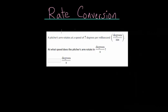For this problem, a pitcher's arm rotates at a speed of 7 degrees per millisecond. So we have 7 degrees up top and milliseconds down below. We want to know what is the speed that the pitcher's arm rotates in degrees per second. So we don't want to use milliseconds anymore. Milliseconds is a very small amount of time, so seconds is just more common. I think that's why we want to convert it to seconds, though there could be many reasons.